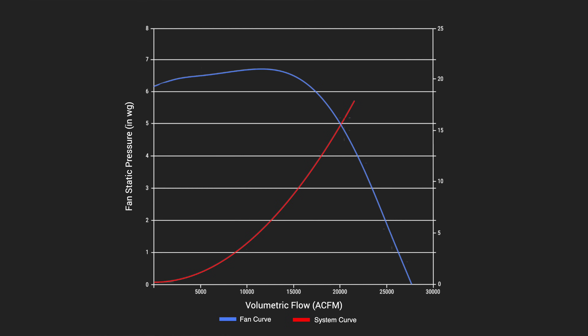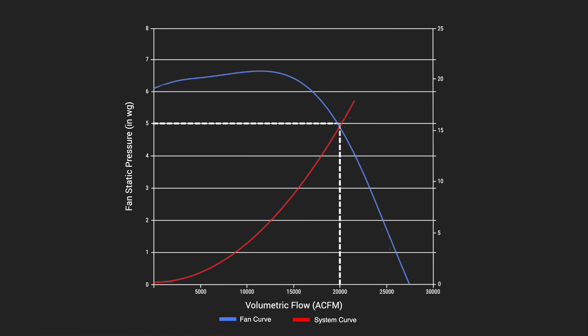This means that to deliver 20,000 CFM in that system, the fan has to generate 5 inches of static pressure to overcome the system's resistance to its airflow. By knowing the amount of system resistance at a particular amount of airflow, the system's resistance to other quantities of airflow can also be determined using the fan laws, provided no other variables change in the system, such as closing a damper.